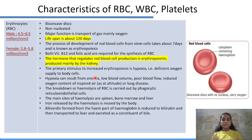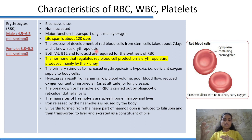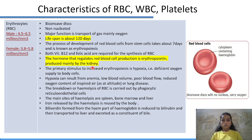RBCs (erythrocytes): count is 4.5–6.5 million per mm³ in males and 3.8–5.8 million per mm³ in females. They are biconcave discs, non-nucleated, with a major function of gas transport, particularly oxygen. Lifespan is about 120 days. Development from stem cells takes about 7 days and is called erythropoiesis. Both vitamin B12 and folic acid are required for RBC synthesis.